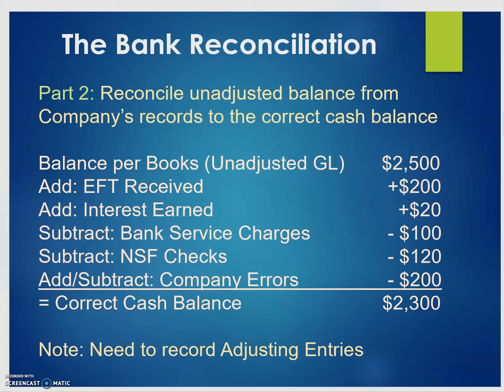The next part is to reconcile the unadjusted balance from the company's records to the correct cash balance. We start with the balance from the company's general ledger — in this example, $2,500. The company notices an electronic funds transfer received from a customer of $200, so we add that to the company's cash balance. We also add any interest earned from having funds in the bank account — in this example, $20.